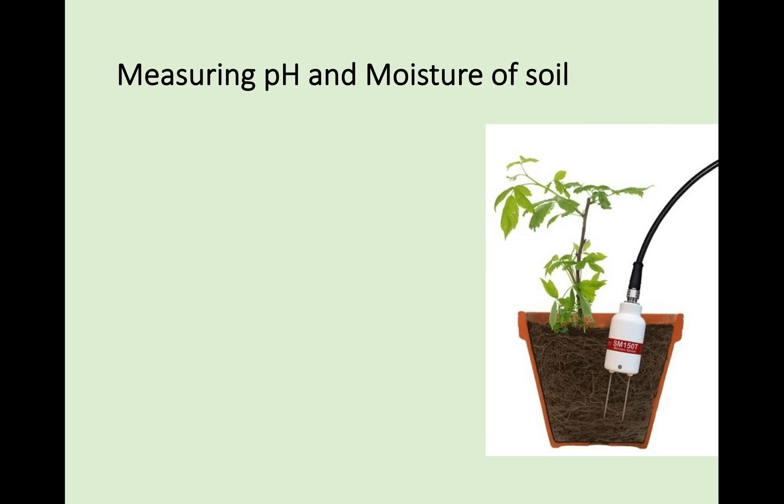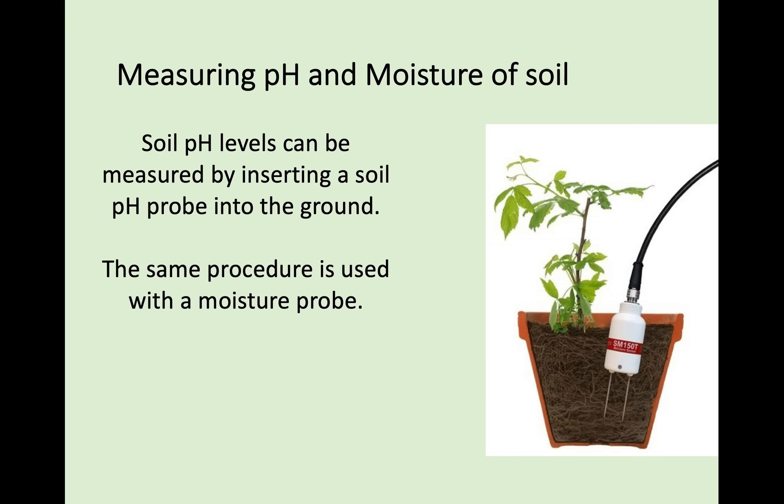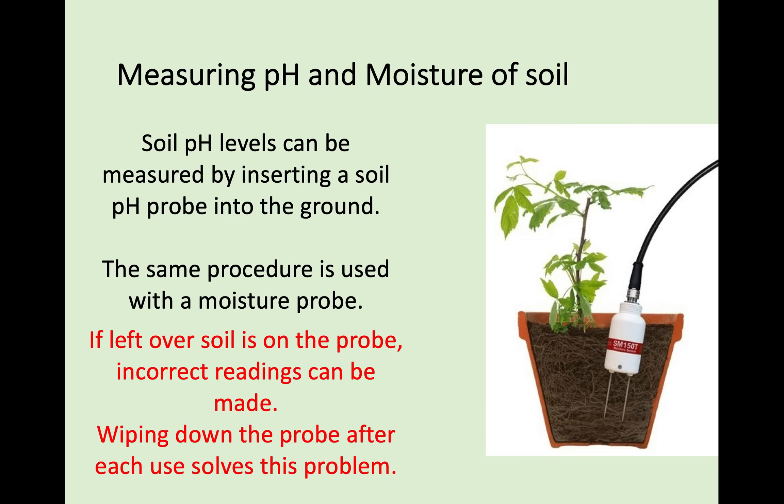For soil pH and moisture levels, you use a soil pH probe and a moisture probe that you plunge into the soil. This is exactly the same issue as the temperature probe — you need to make sure you remove any leftover soil from the probe, otherwise you'll get an inaccurate reading.